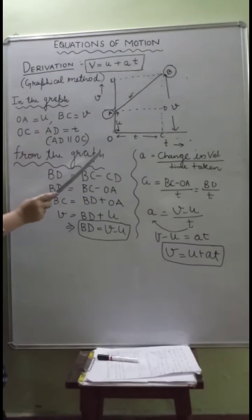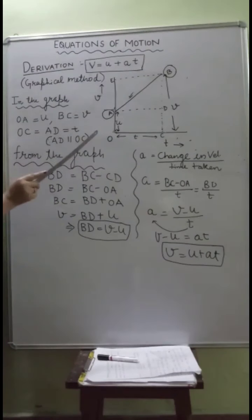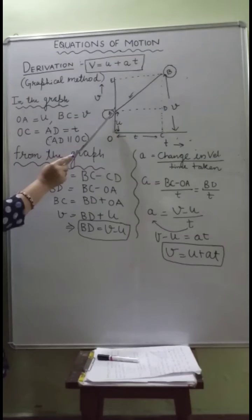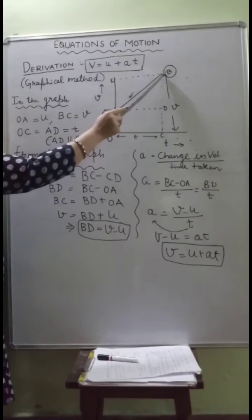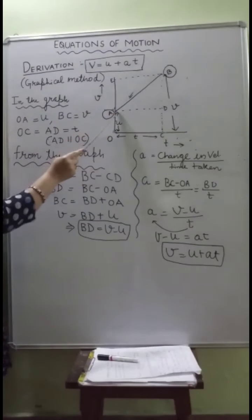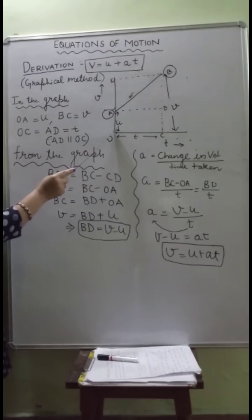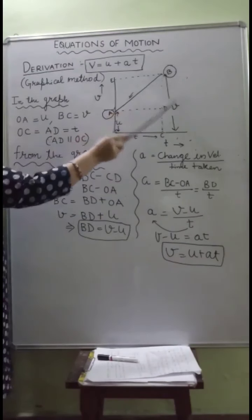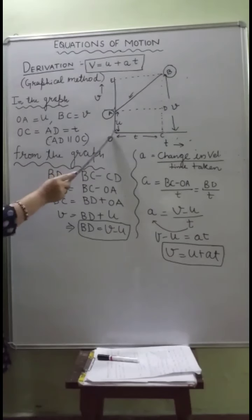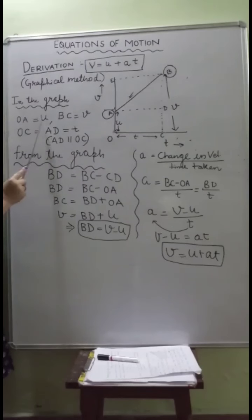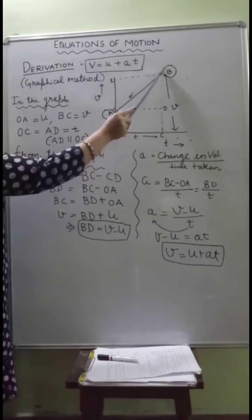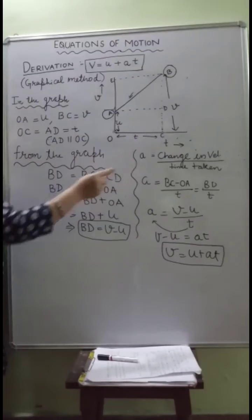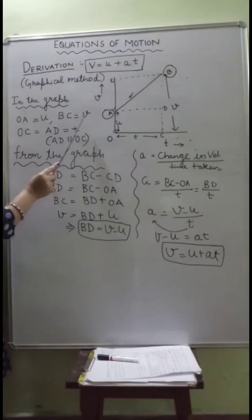This is the graph — first, understand the graph. We have considered an object which started from point A, where A is the initial point, and it reaches point B. So AB is the main graph showing the motion of the object. Since initial velocity is non-zero, the object starts from A and reaches B. At point A its initial velocity is u, and at point B its final velocity is v. The length OA represents the initial velocity u, and the length BC represents the final velocity v.